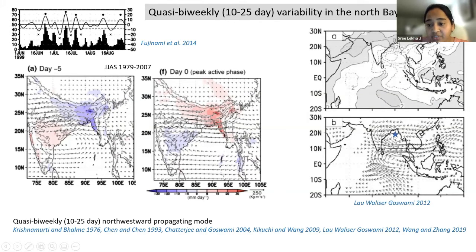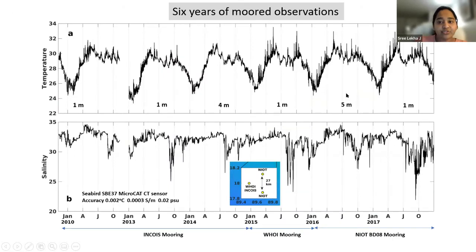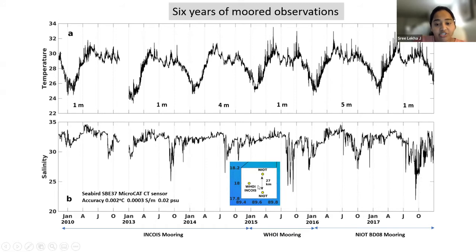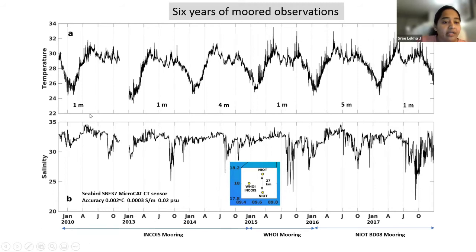The mooring observatory is marked by the star here and is about 500 kilometers away from the Ganga-Brahmaputra-Meghna river mouth and the Irrawaddy river mouth. Here are six years of mooring observations from this North Bay of Bengal observatory centered around 18 degrees North. There are three moorings spaced about 27 to 30 kilometers apart — two maintained by the National Institute of Ocean Technology in Chennai, and the third was a WHOI mooring deployed from 2015 onward. The top panel shows temperature and the bottom panel shows salinity measured at these moorings, with the shallowest measurement depths noted.